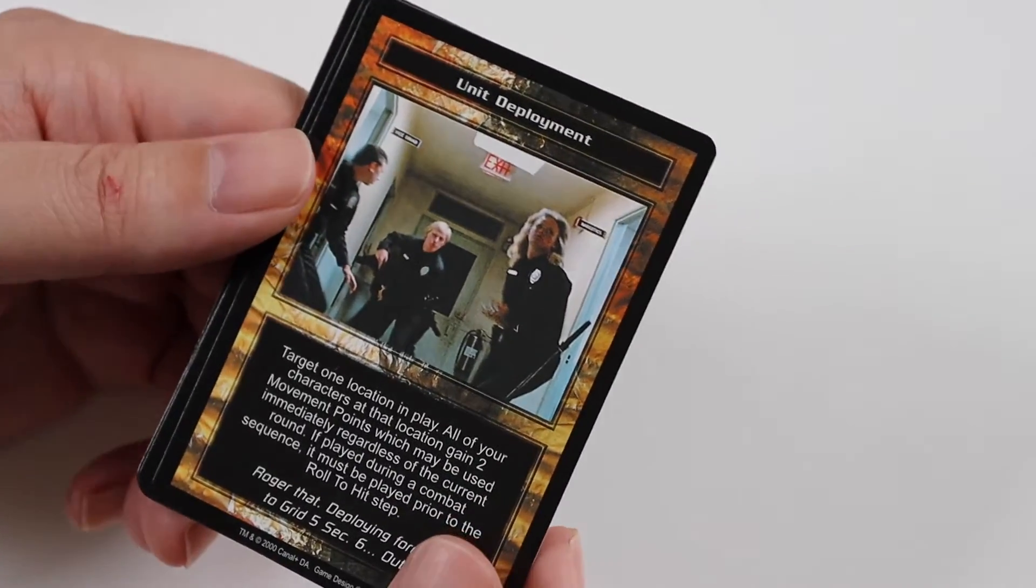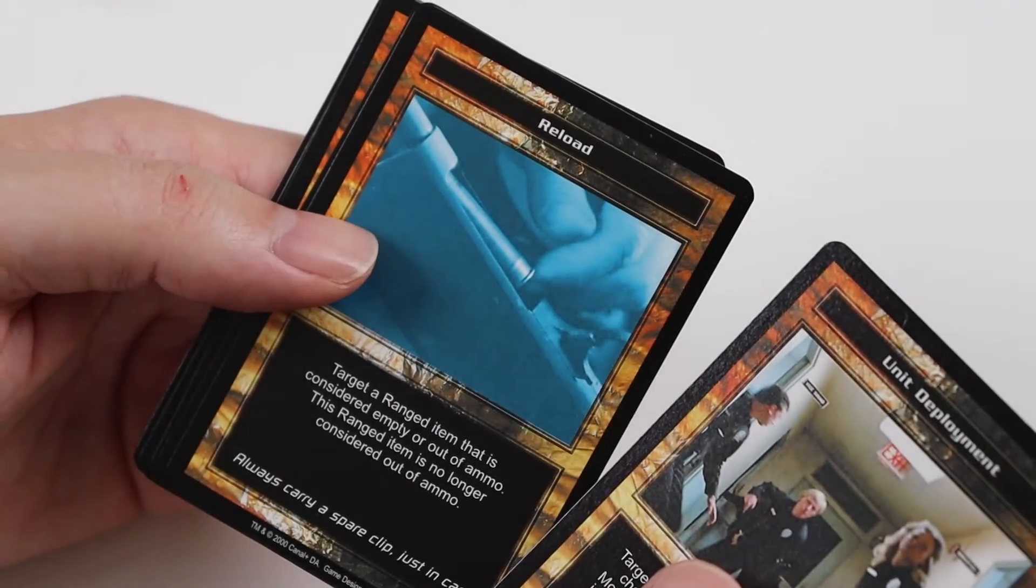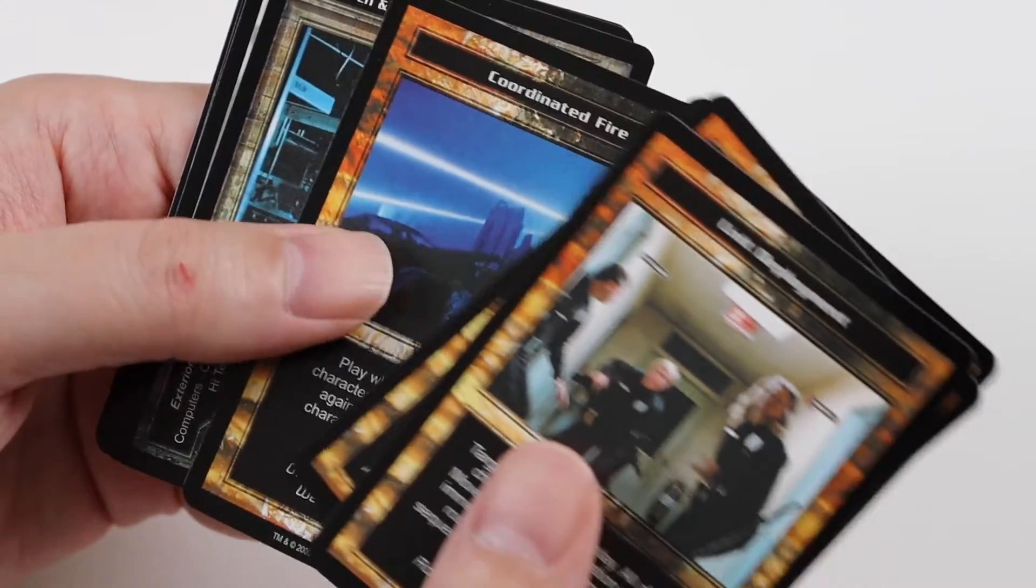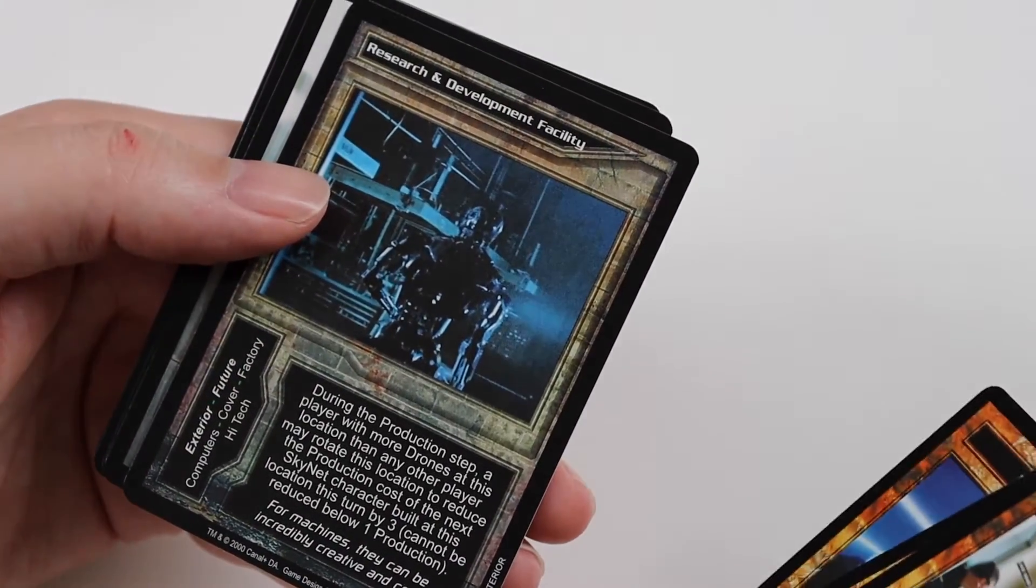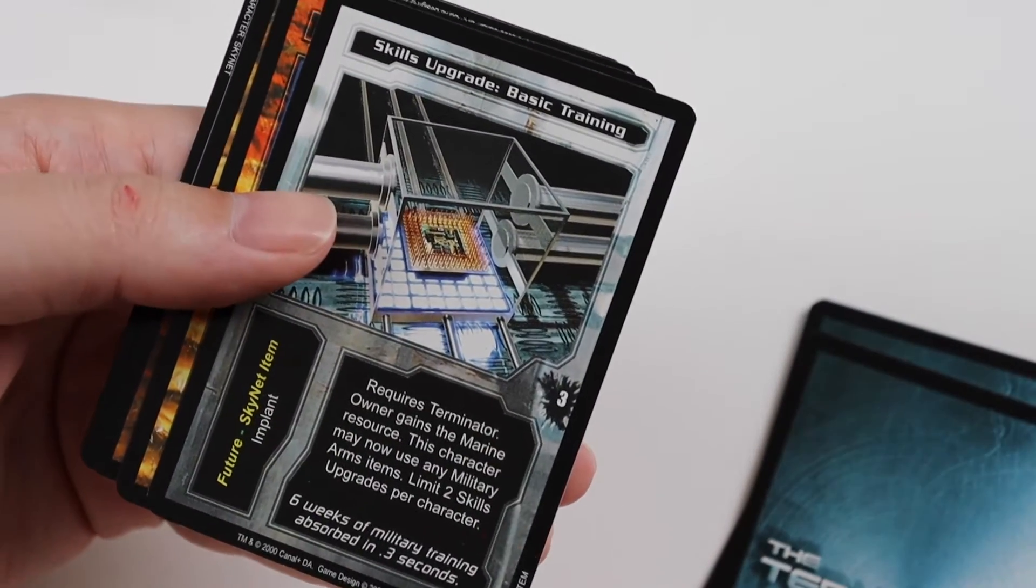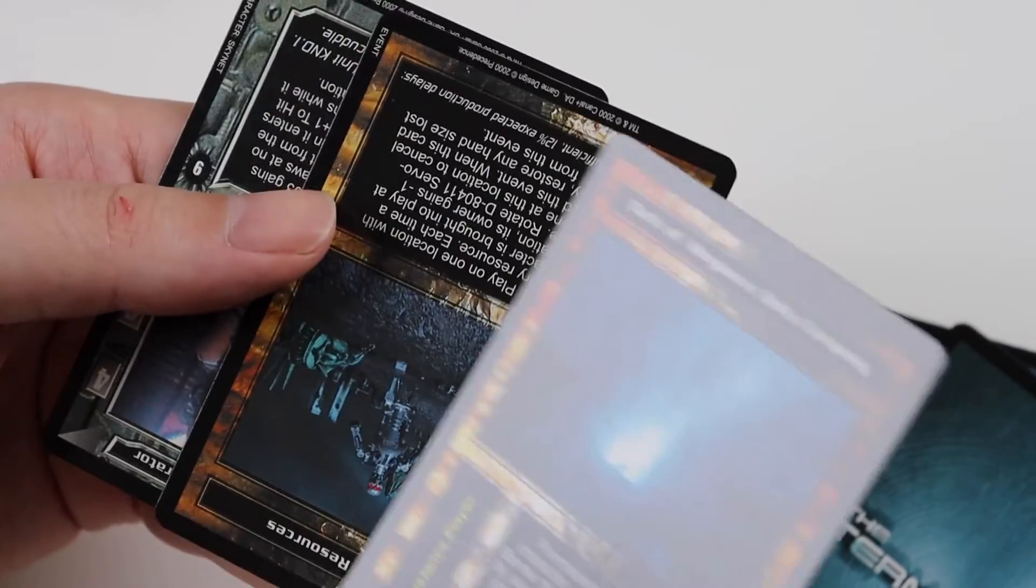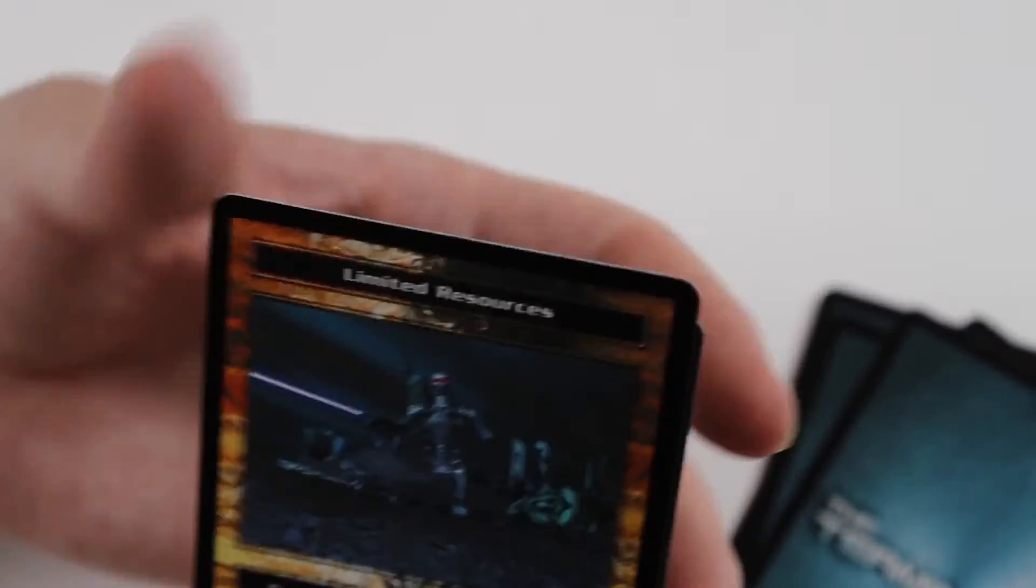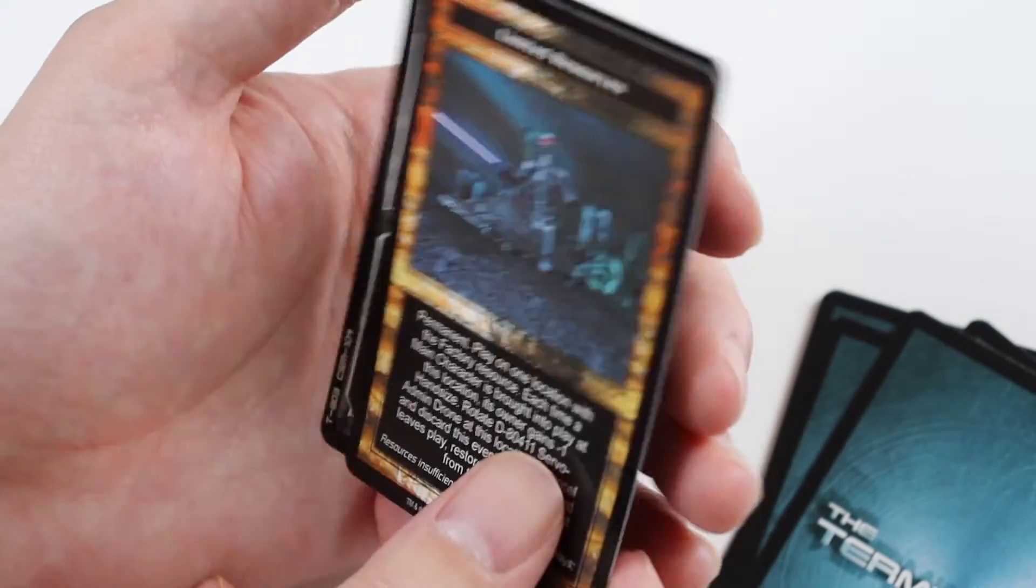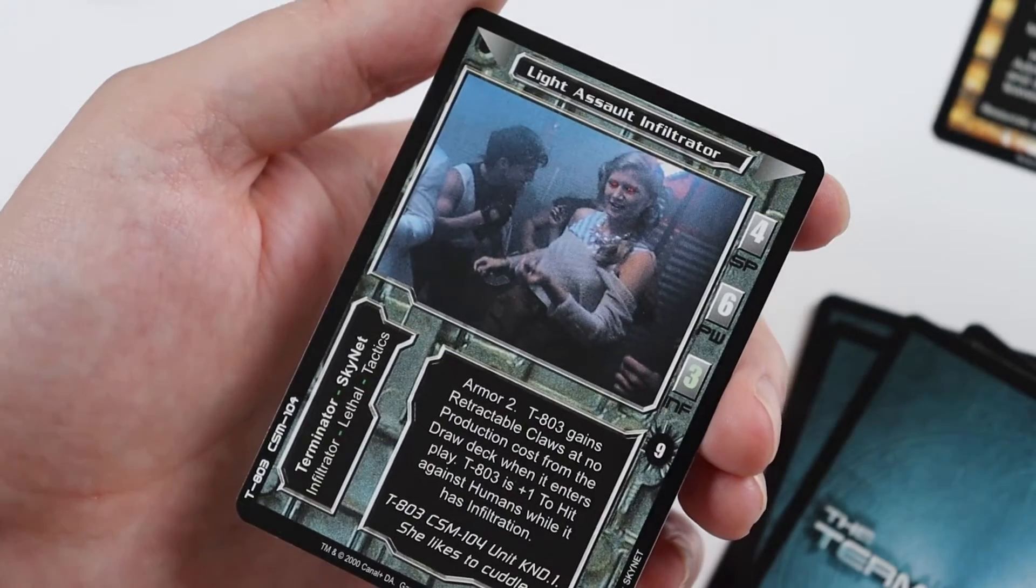So I found out the rarities. So the first four cards are common cards. Those are unit deployment, reload, storm the wires, coordinated fire. Then you get uncommons. So you get three of those. Research and development facility, skills upgrade basic training, and oath of allegiance delta company. Then upside down, this is a rare card called limited resources. And then you get another common card. This is light assault infiltrator.